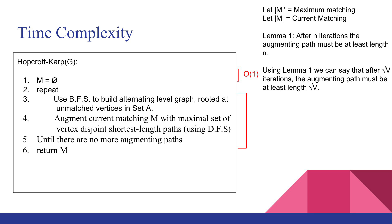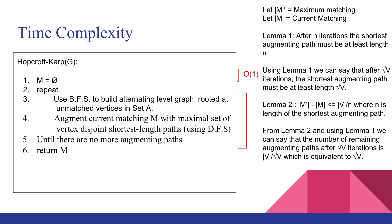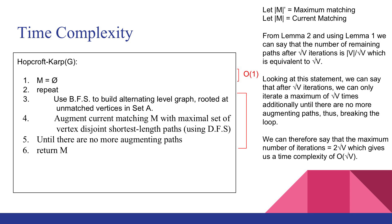Lemma 1 states that after n iterations, the augmenting path must be at least length n. Using Lemma 1, we can say that after √v iterations the augmenting path must be at least length √v. Lemma 2 states that the difference between the maximum matching and the current matching can be at most v divided by n, where n is the length of the shortest augmenting path. From Lemma 2 and using Lemma 1, the number of remaining paths after √v iterations is v divided by √v, which is equivalent to √v. Therefore after √v iterations, we can only iterate a maximum of √v times additionally until there are no more augmenting paths, giving a maximum number of iterations equal to 2√v — a time complexity of O(√v).